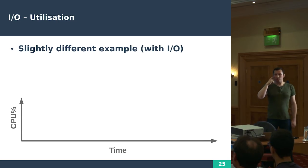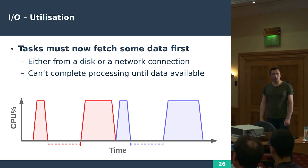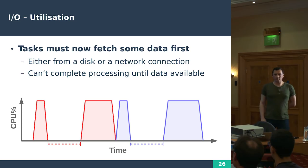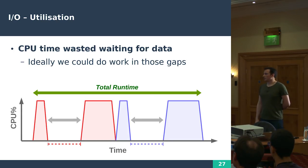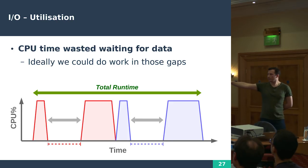Now let's imagine a slightly different program with some I/O. Before our task can do its processing, it has to go and fetch some data from a disk or network, and that might take quite a long time. We do a little bit of work to start that operation, then we wait, then we do the processing. The second task comes along and we start that going, wait for data, then process it. That CPU time is just wasted — it's doing nothing. Ideally we want to do something in there and make better use of our hardware. This is what we mean by utilization.